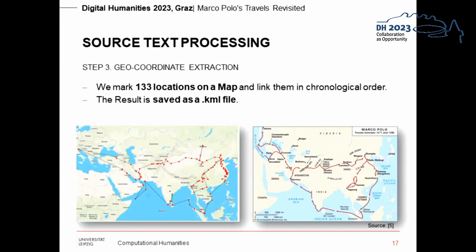We can put the resulting 133 locations on the map and link them with possible chronological order. The result is saved as a KML file — Keyhole Markup Language, used in Google Earth — for further processing. If we compare this result with the map version provided by Britannica, the sequence of the route from our gold standard seems very plausible.